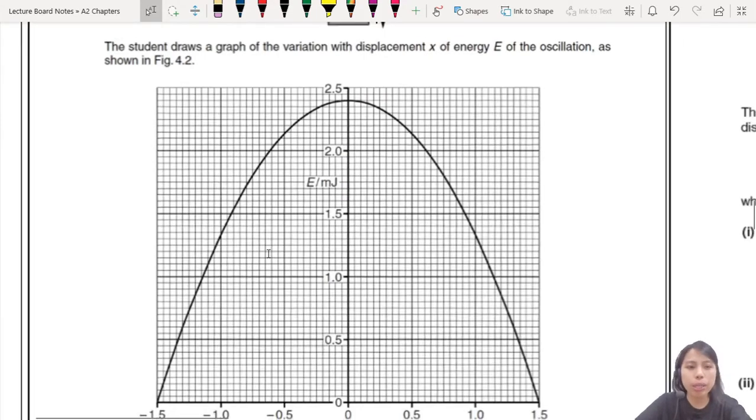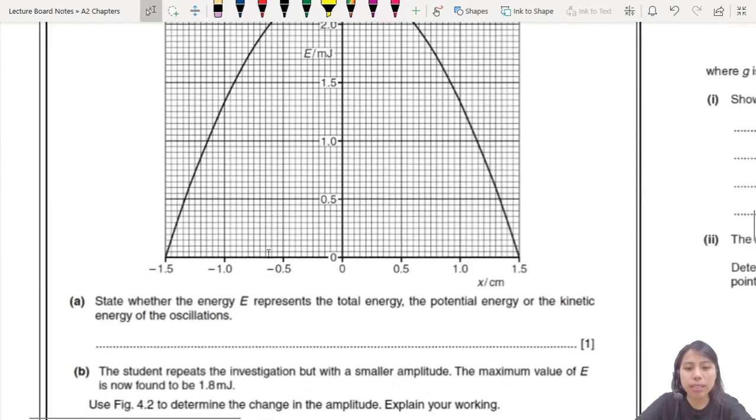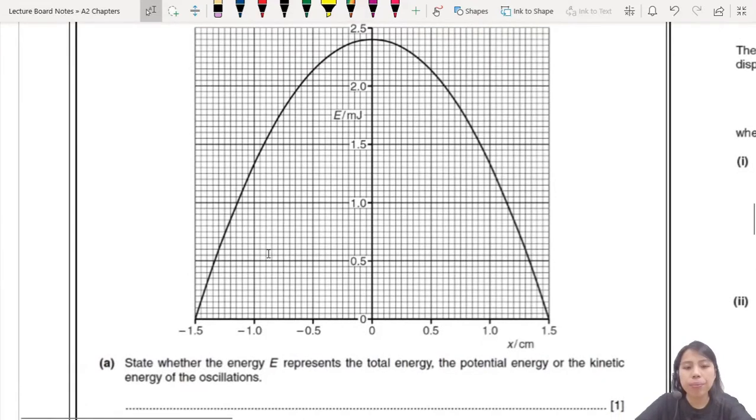The student draws a graph of the variation with displacement X of energy E of the oscillation as shown. So they are showing us some energy graph here. What is this graph? If you recognize it, you're like, oh, I know, miss. This one, ah, free answer, is it? So what is this graph?